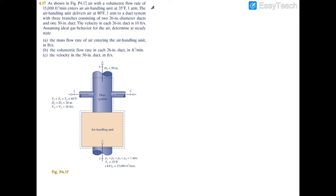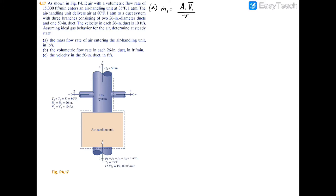For part A, we're looking for the mass flow rate at duct number one. At duct number one we can use the formula: mass flow rate at one equals the area at one times the velocity at one divided by the specific volume at one. Notice that the numerator is just equal to the volumetric flow rate, so we set that equal to 15,000 cubic feet per minute and convert to per second by dividing by 60.